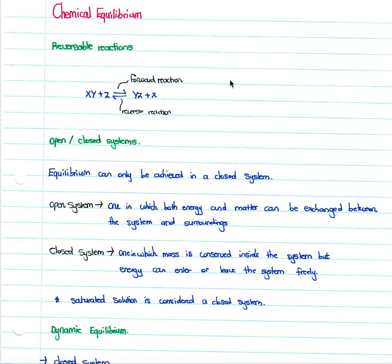We'll cover the chemical equilibrium section in the chemistry syllabus. First of all, we need to know that in order for an equilibrium to be reached, we need a reversible reaction. As shown here, we have compounds XY plus another ingredient Z. This reaction has a forward reaction where XY plus Z forms YZ plus X, and a bottom arrow referring to the reverse reaction in which YZ plus X gives XY plus Z.